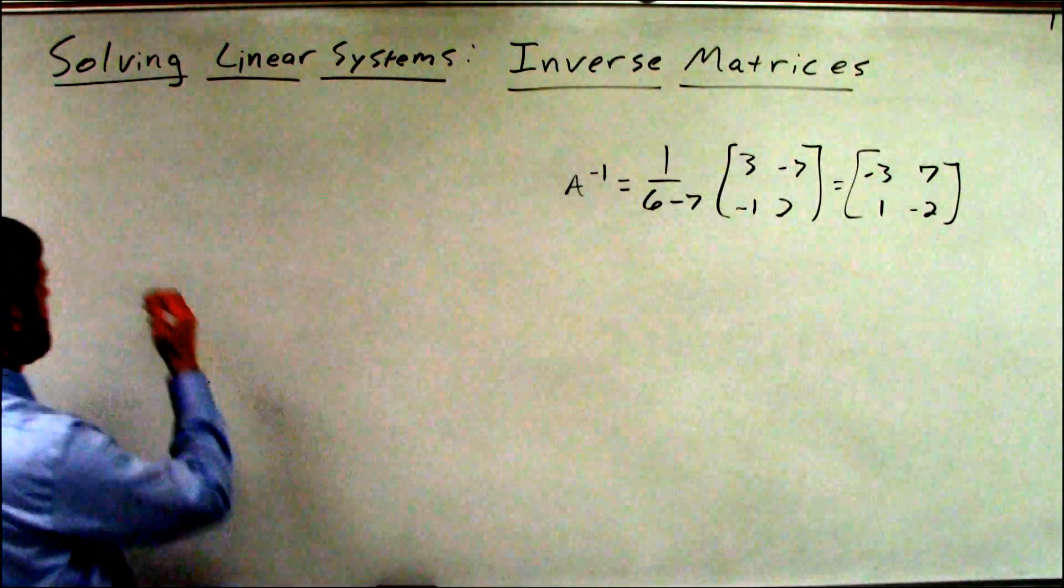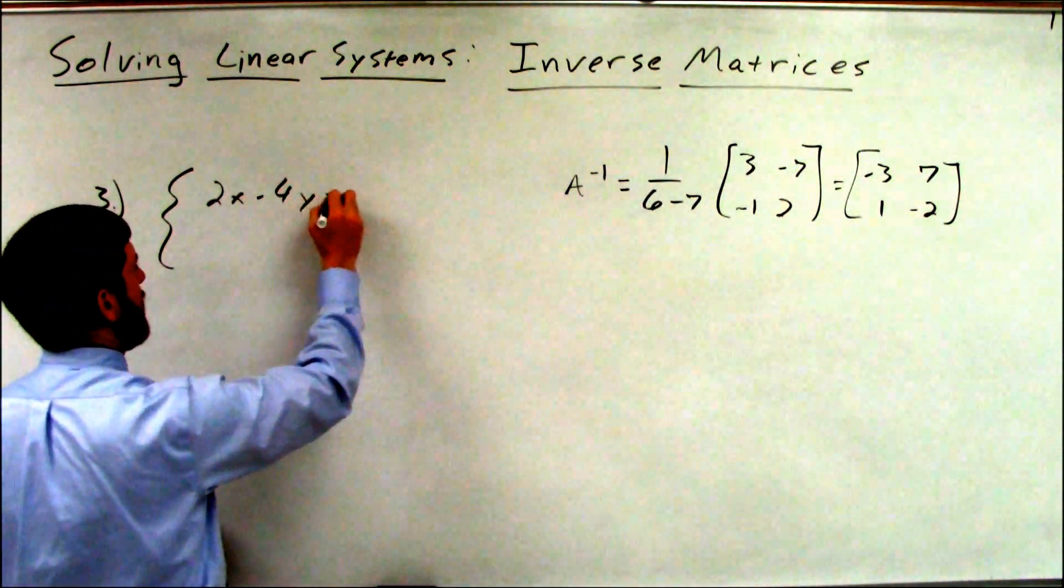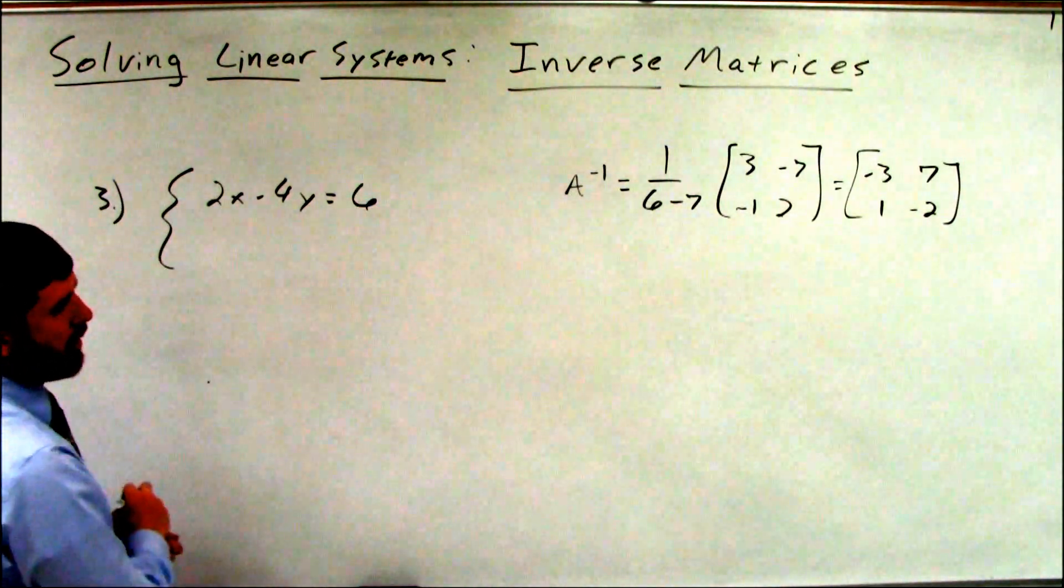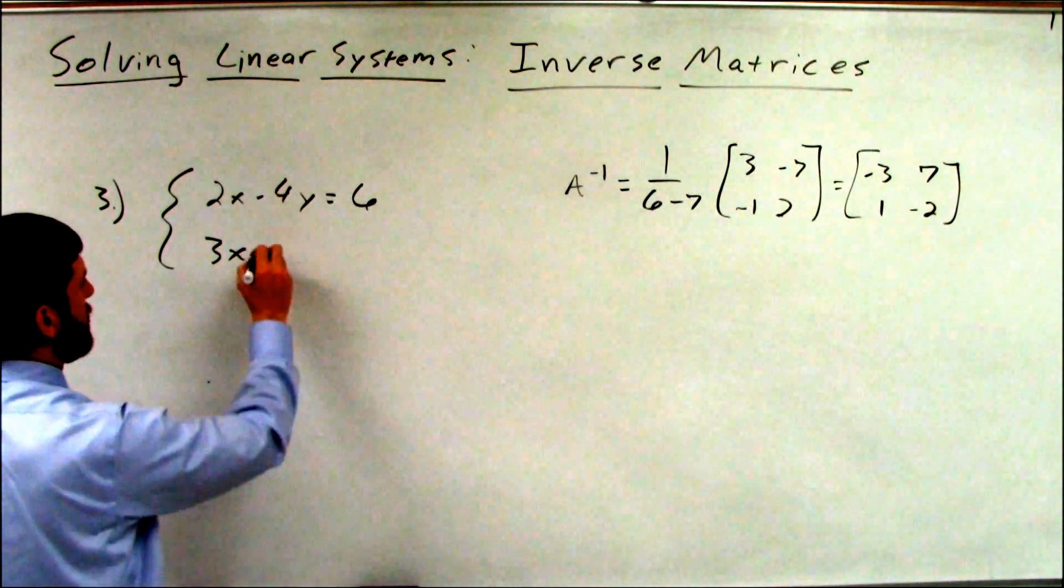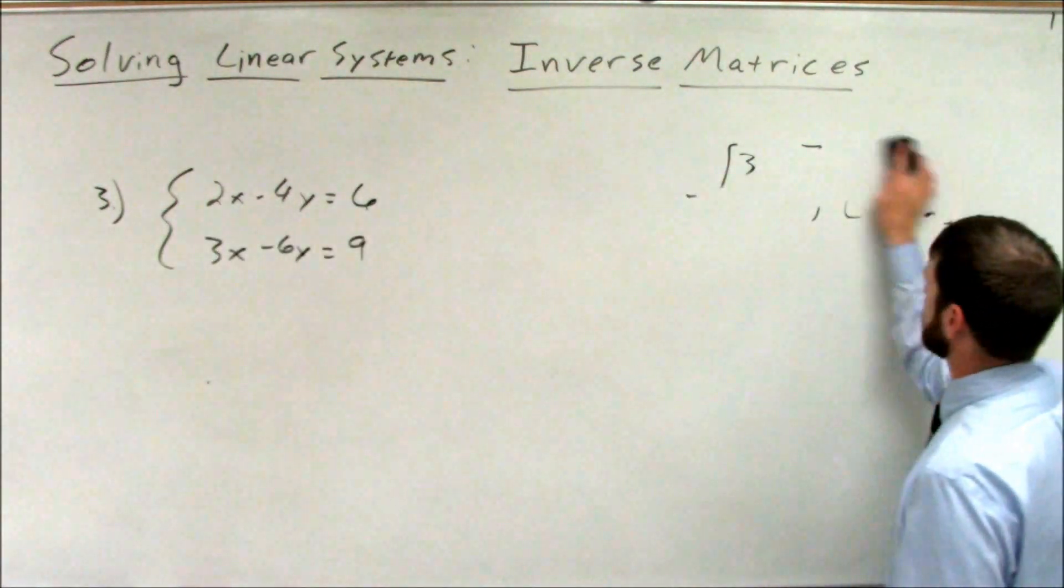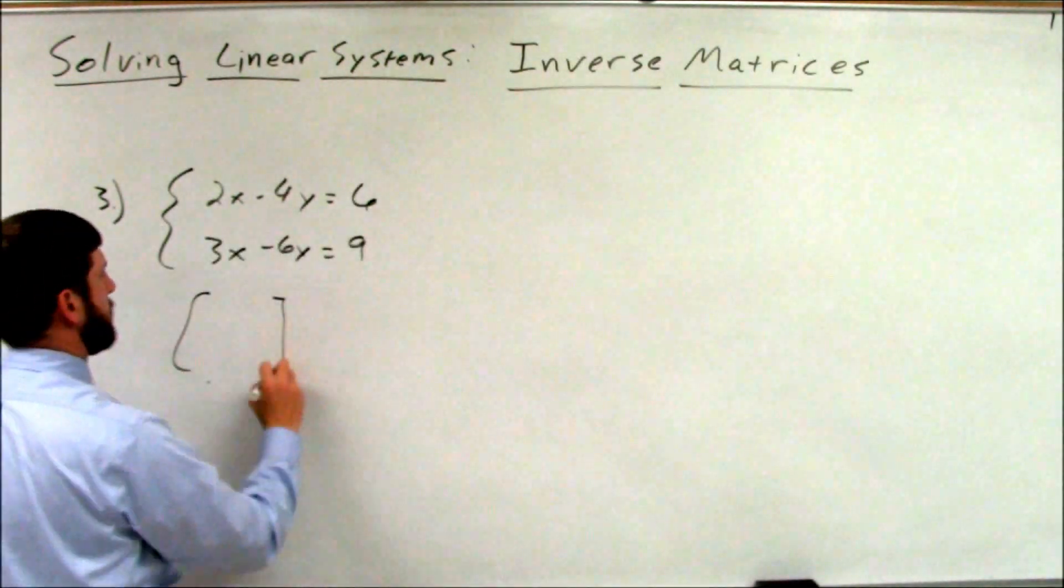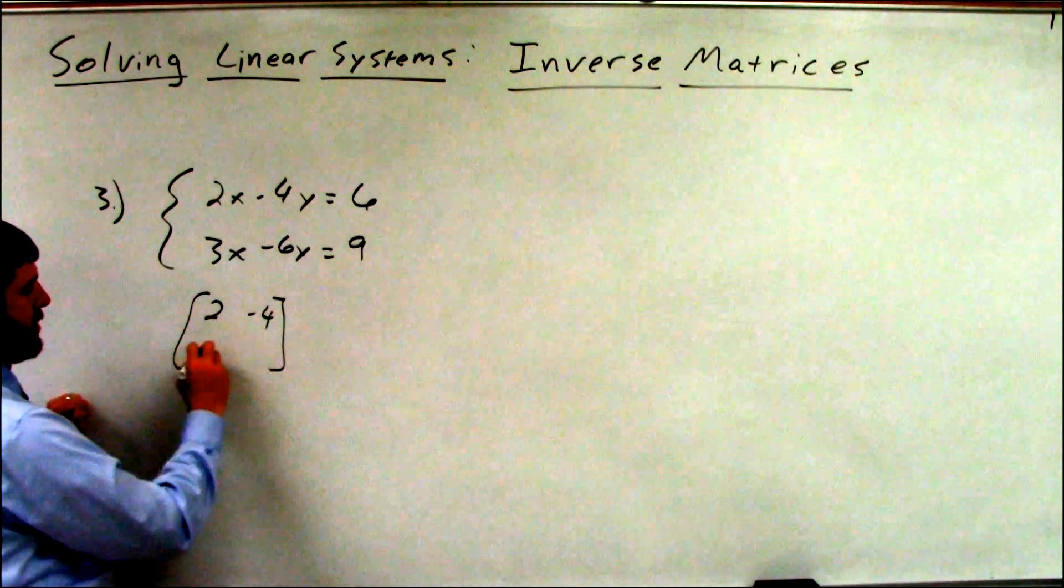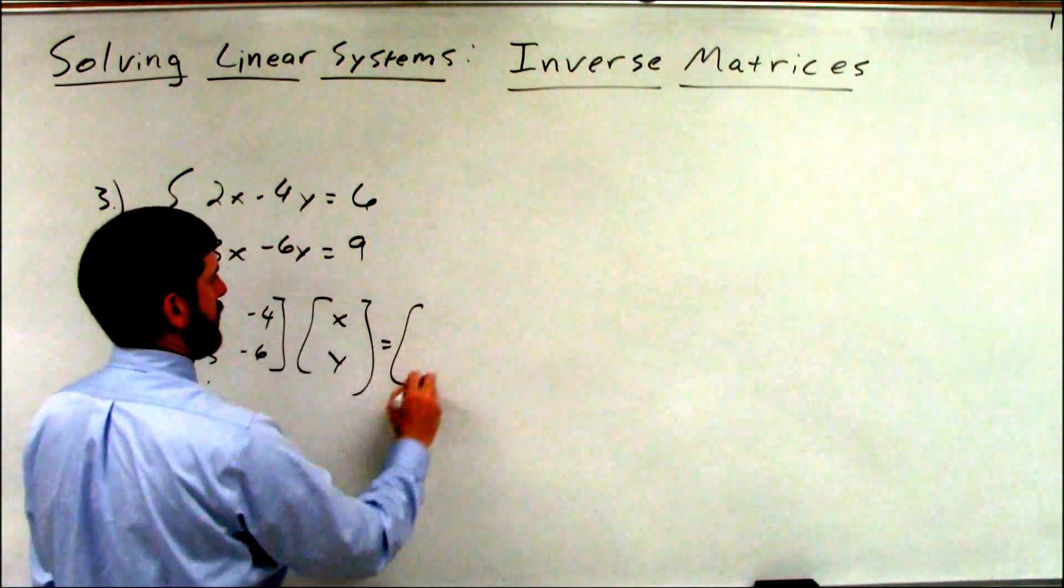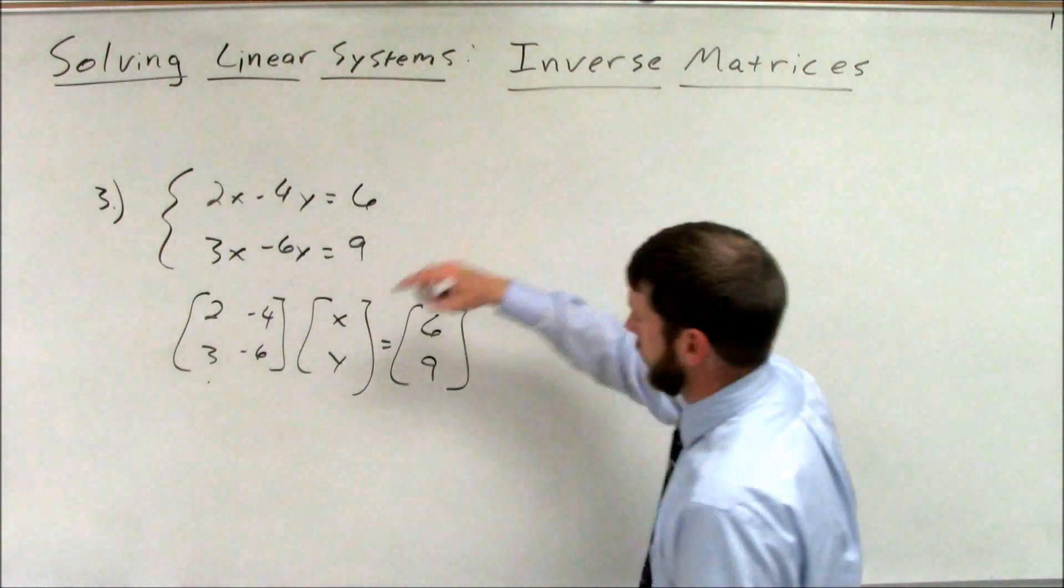So let's say we have this system right here. 2x minus 4y equals 6. 3x minus 6y equals 9. Now in this system, if we go through and solve. Let's set it up. Coefficient matrix. Variable matrix. Constant matrix. Now let's find the inverse.